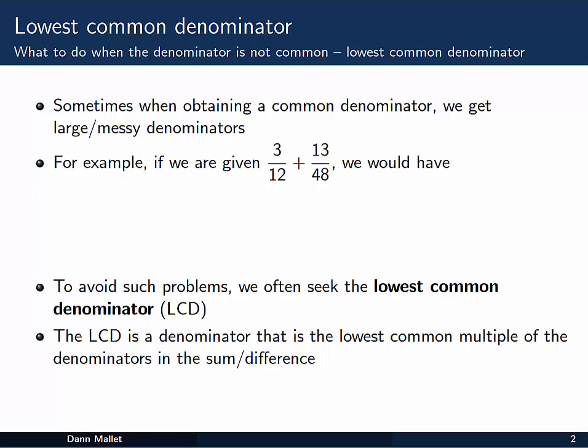So for example if we're given 3 on 12 plus 13 on 48, the simplest thing to do would be to multiply the first fraction by 48 on 48, and the second fraction by 12 on 12. But as you can see we end up with quite large numbers here on the denominator, not too easy to deal with in our heads, and numbers that are a bit messy to work with.